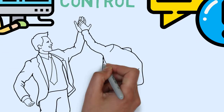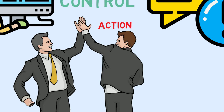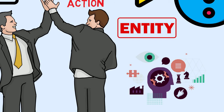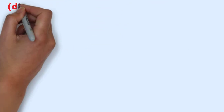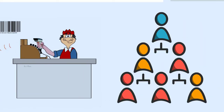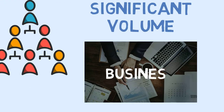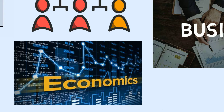However, they may affect the freedom of action of an entity or participate in its decision-making process. D: A customer, supplier, franchiser, distributor, or general agent with whom an entity transacts a significant volume of business, simply by virtue of the resulting economic dependence.